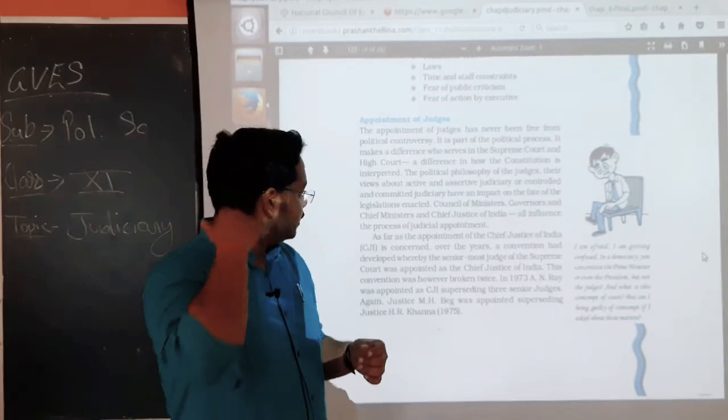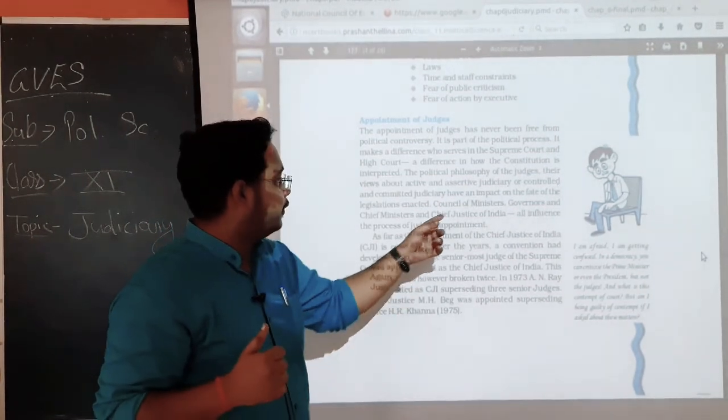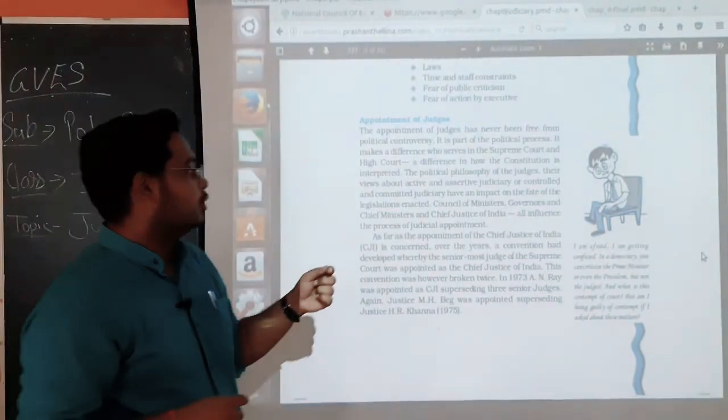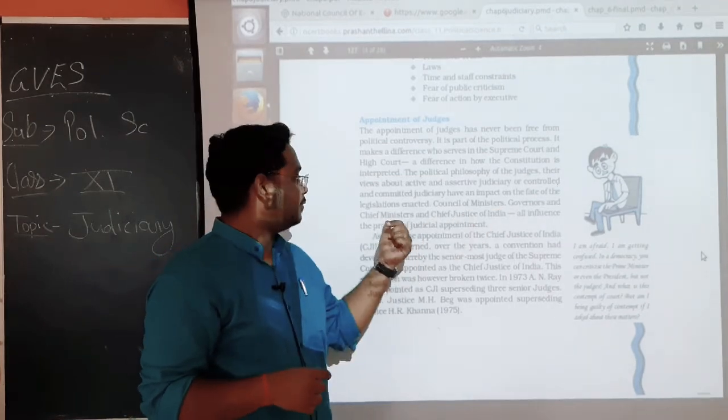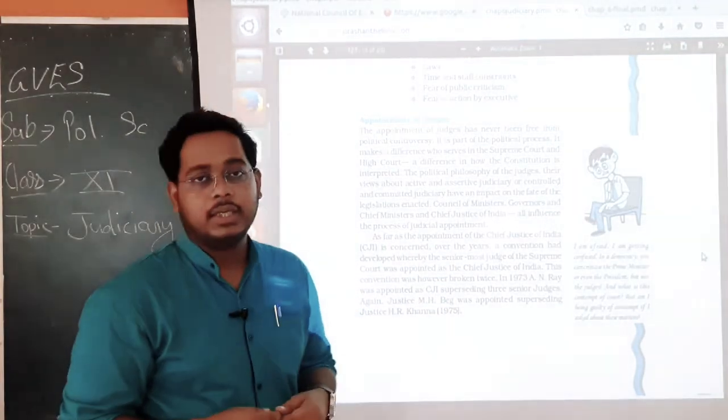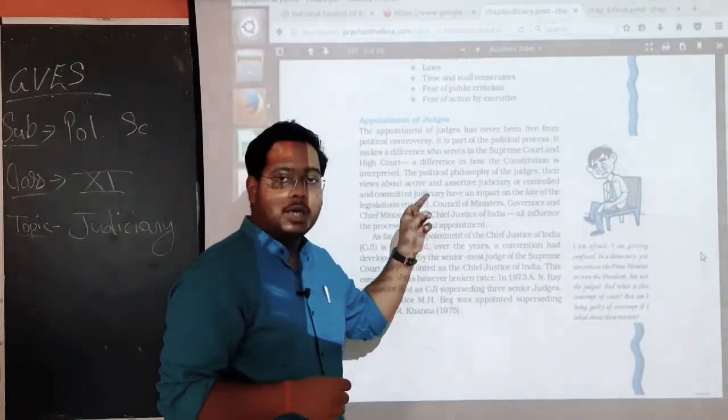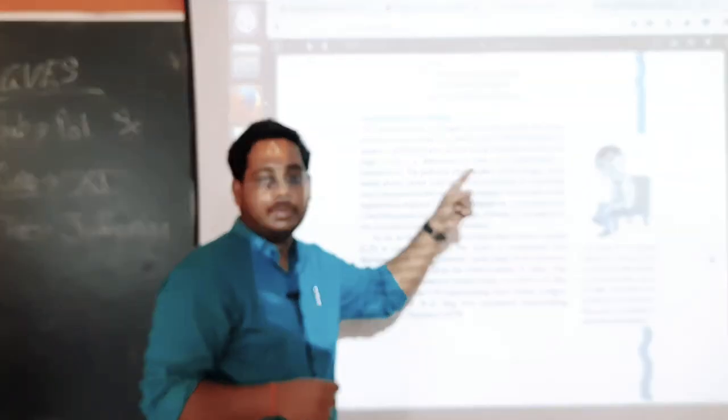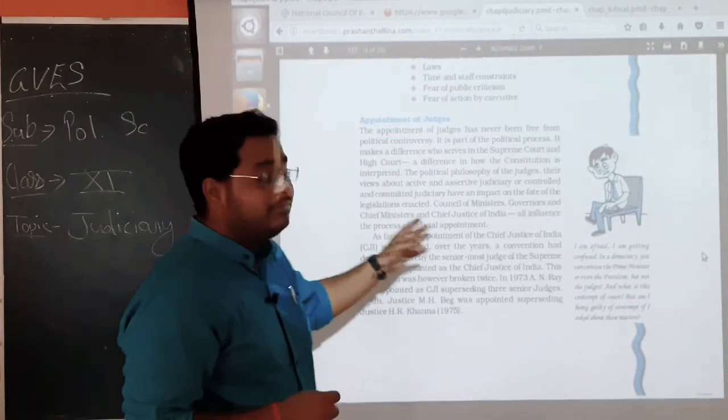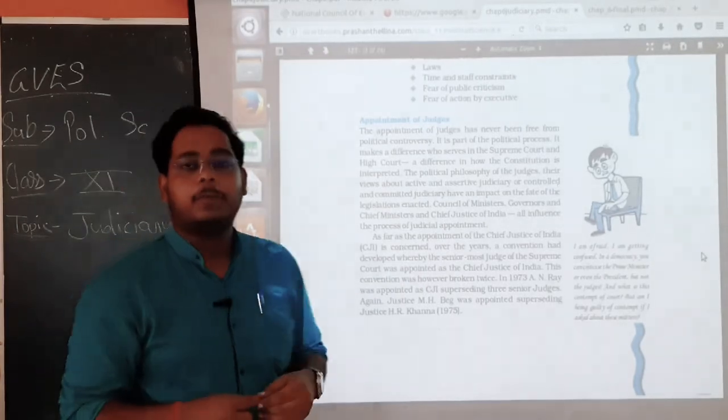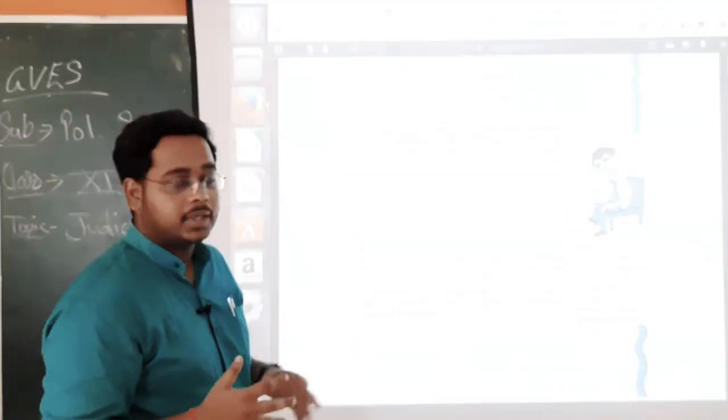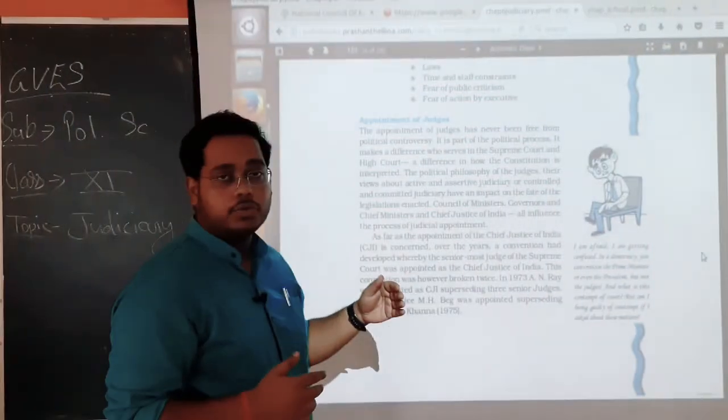So, the Council of Ministers, Governors, and Chief Ministers, and Chief Justice of India all influence the process of judicial appointment. This is true that the Council of Ministers, Governors, and Chief Minister's role is in High Court. But if you talk about Council of Ministers, Chief Justice of India, their role is in the center as well as in the state. All of them influence the process of judicial appointment. Who will get appointment? They are having some kind of influence towards the judicial appointment.